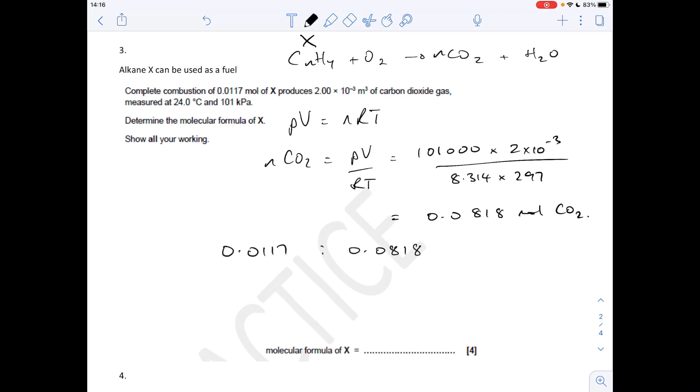When you put all that in your calculator you should get 0.0818 moles of CO2. The mole ratio between X and CO2 is 0.0117 to 0.0818. Dividing by the smallest gives us a 1 to 7 ratio. So what that means is there must have been seven carbons in X. It's an alkane - remember alkanes are CnH2n+2 - and so therefore it must be C7H16.